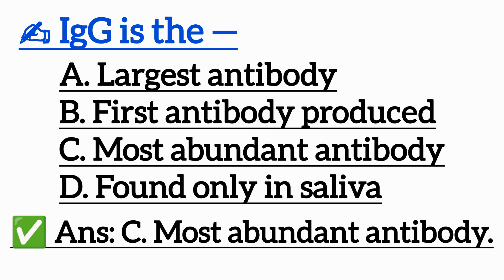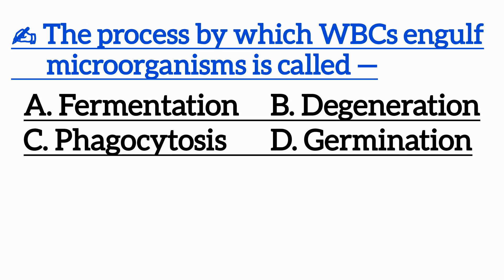Question 10: The process by which WBCs engulf microorganisms is called — Option A: Fermentation, Option B: Degeneration, Option C: Phagocytosis, Option D: Germination.